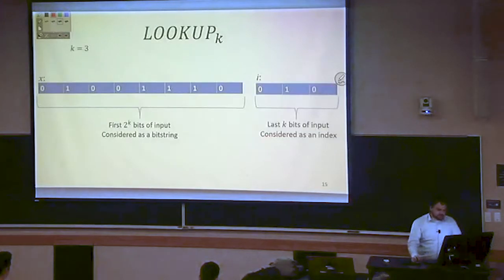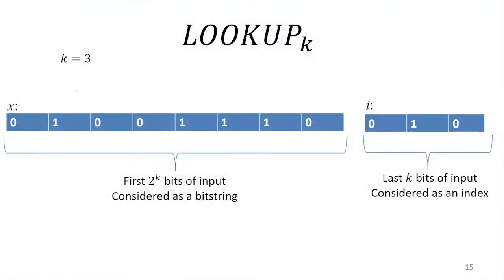As an example, if k equals 3, that means I have 8 bits: bit 0, bit 1, bit 2, bit 3, 4, 5, 6, 7. These are my bits at the various indices. i is telling me which bit in this string to return. In this case i is 2, so I want to return the thing at index 2, which means I'm returning the 0 here. This is the goal of lookup — we're going to be able to index into a string.